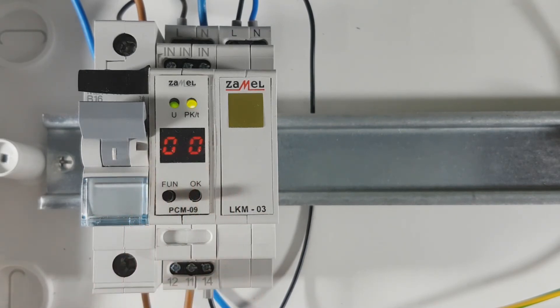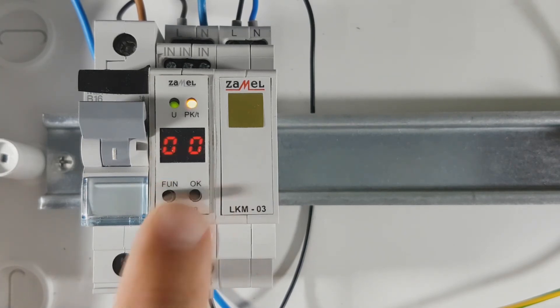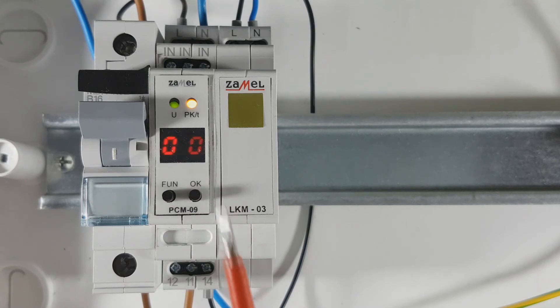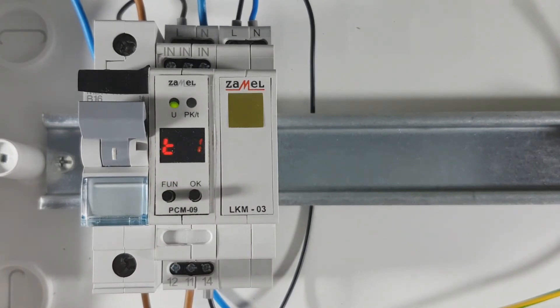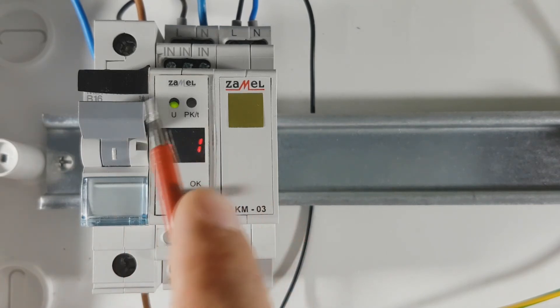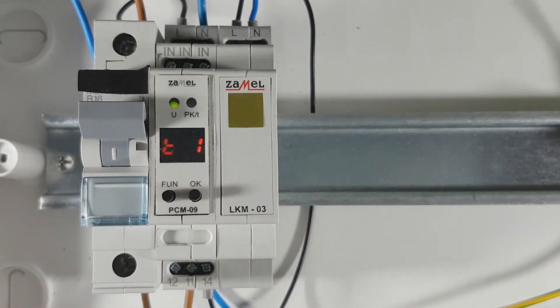The program automatically switches to time setting in minutes, and then in hours. The PK LED indicates the time range change after making the settings for T1 time. Proceed to the T2 and T3 time. It can be done in the same way as for T1 time.